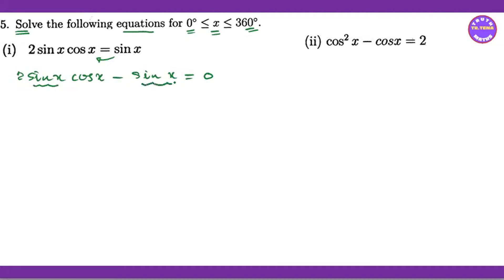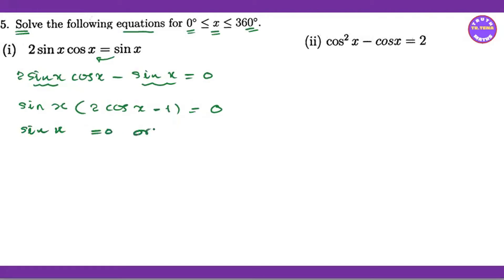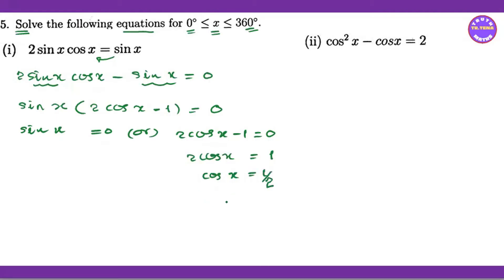So we have sin x cos x minus sin x equals 0. Factor out sin x: sin x(2cos x minus 1) equals 0. So either sin x equals 0, or 2cos x minus 1 equals 0, which gives cos x equals 1/2.